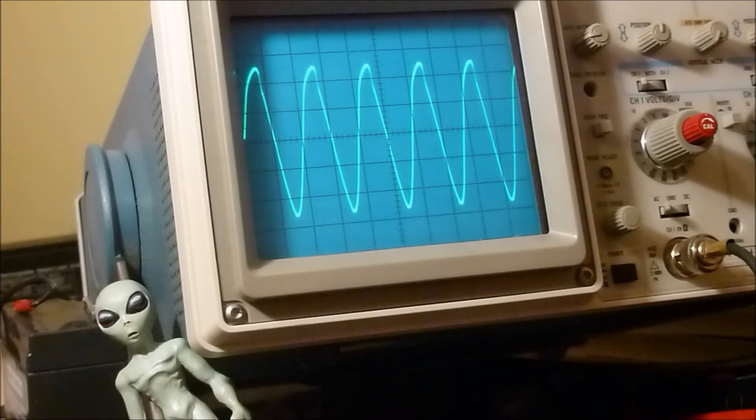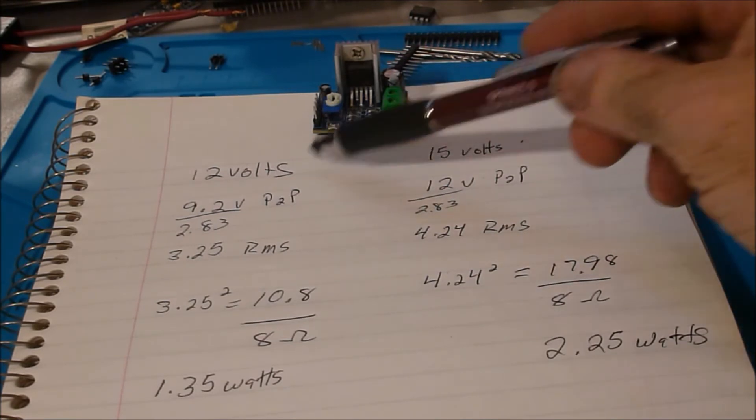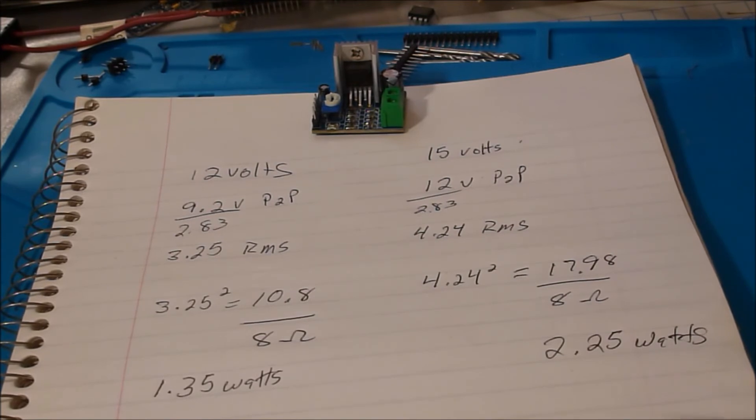Here are our results. At 12 volts, 9.2 peak to peak which divided by 2.83, we're getting 3 and a quarter volts RMS. Then square that up, get 10.8 divided by 8 ohms, gives us a whopping 1.35 watts. When I cranked it up to 15 volts we were looking at 12 volts peak to peak, divided by 2.83, that was giving us 4.24 RMS volts. Then squared that up, gave us 17.98 and divided by the 8 ohms, gave us a whopping grand total of 2.25 watts.